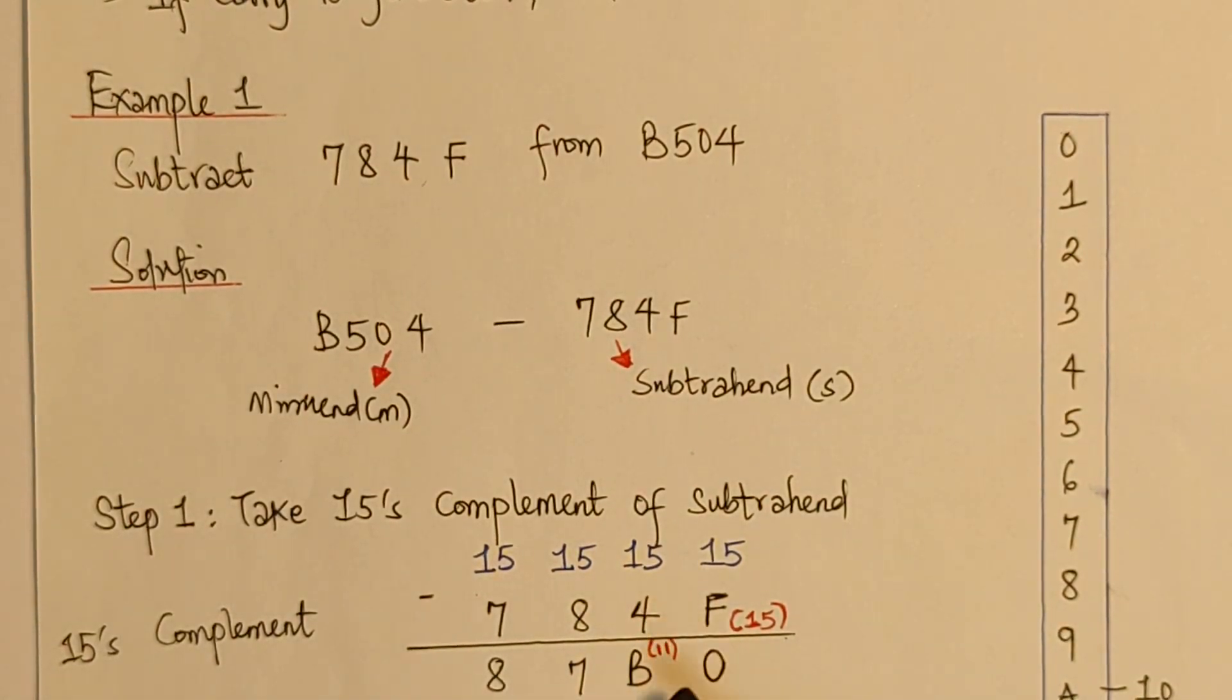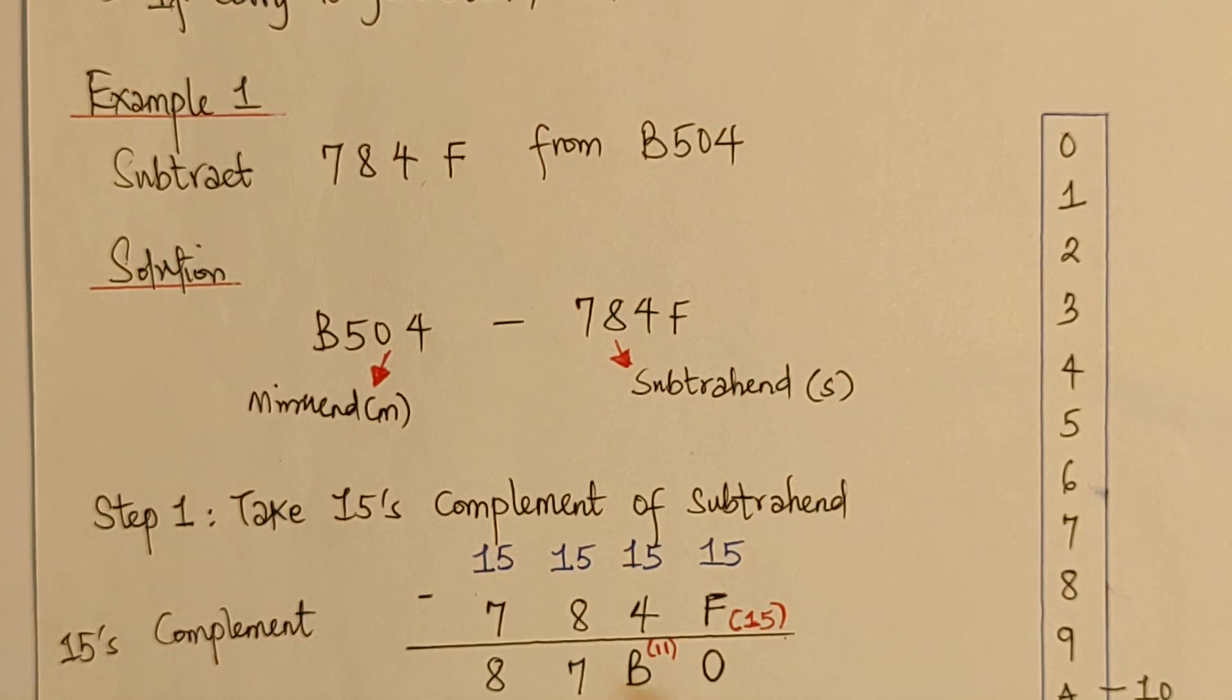15 minus 4, which is 11, but we have to put it in the hexadecimal form, which becomes B. 15 minus 8 becomes 7, and 15 minus 7 becomes 8.